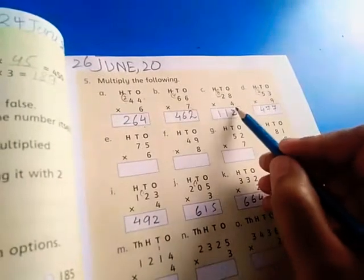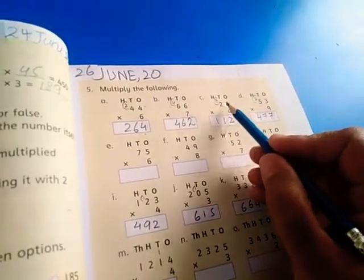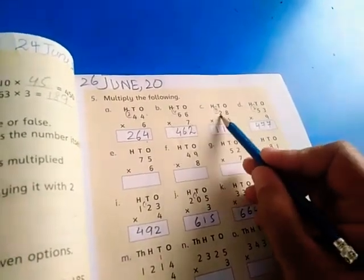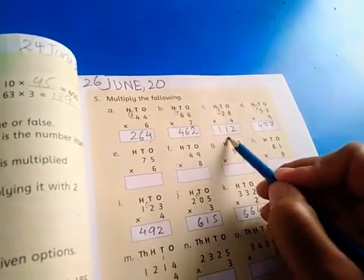28 multiplied by 4. 4 eights are 32. 4 twos are 8. 8 plus 3 is 11.